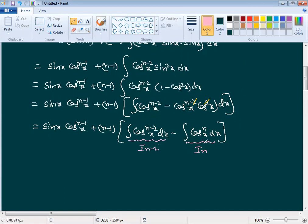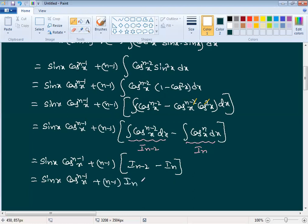By the original question definition, this is In and this is In minus 2. Continuing: sin x cos power n minus 1 x plus n minus 1 into bracket, this is In minus 2 minus this is In. Multiply n minus 1 to both terms.